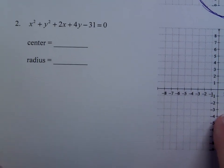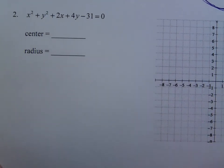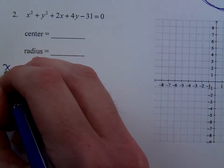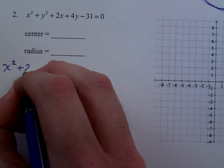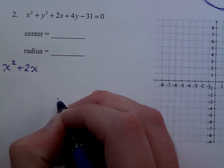Here we have x squared plus y squared plus 2x plus 4y minus 31 equals 0. So rearrange. So you have x squared plus 2x.